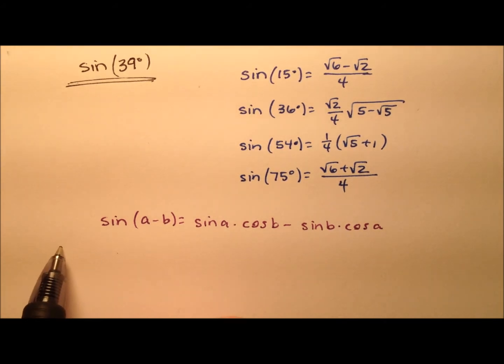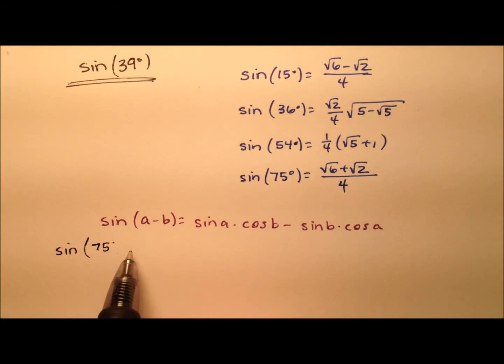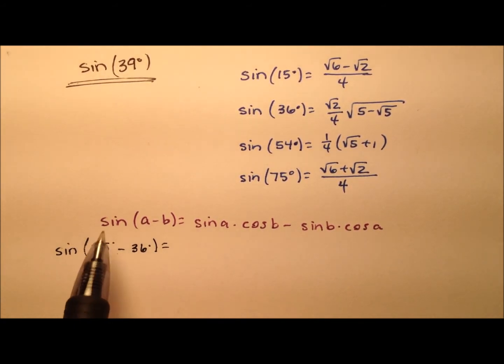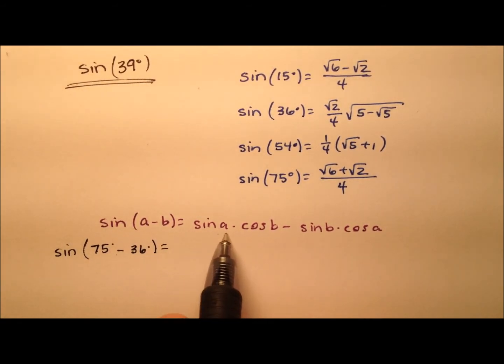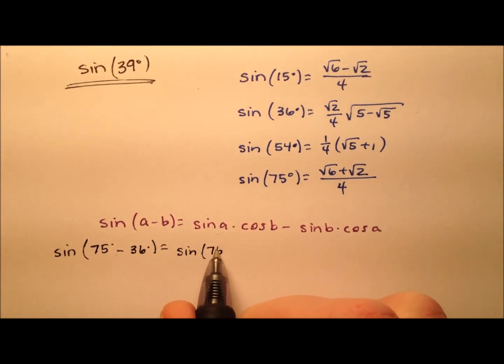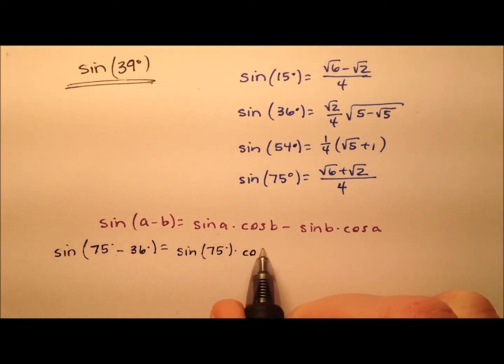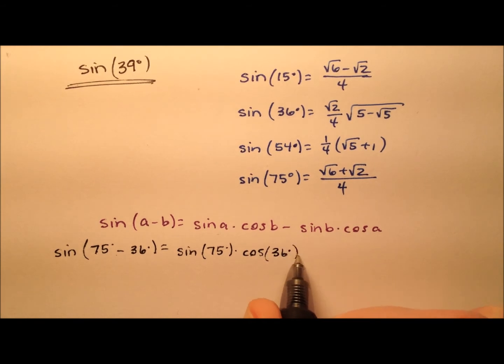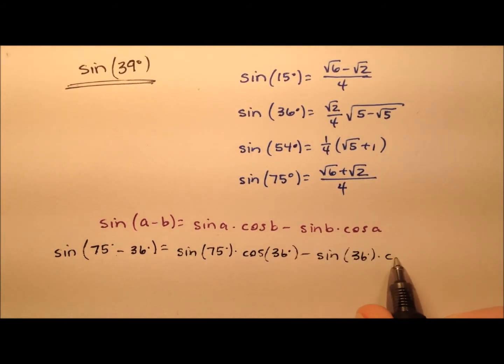Let's go ahead and do that. For this one, we're going to use the sine of 75 degrees minus 36 degrees, because 75 minus 36 is going to equal 39 degrees. So using this expansion, we're going to say the sine of 75 degrees times the cosine of 36 degrees minus the sine of 36 degrees times the cosine of 75 degrees.